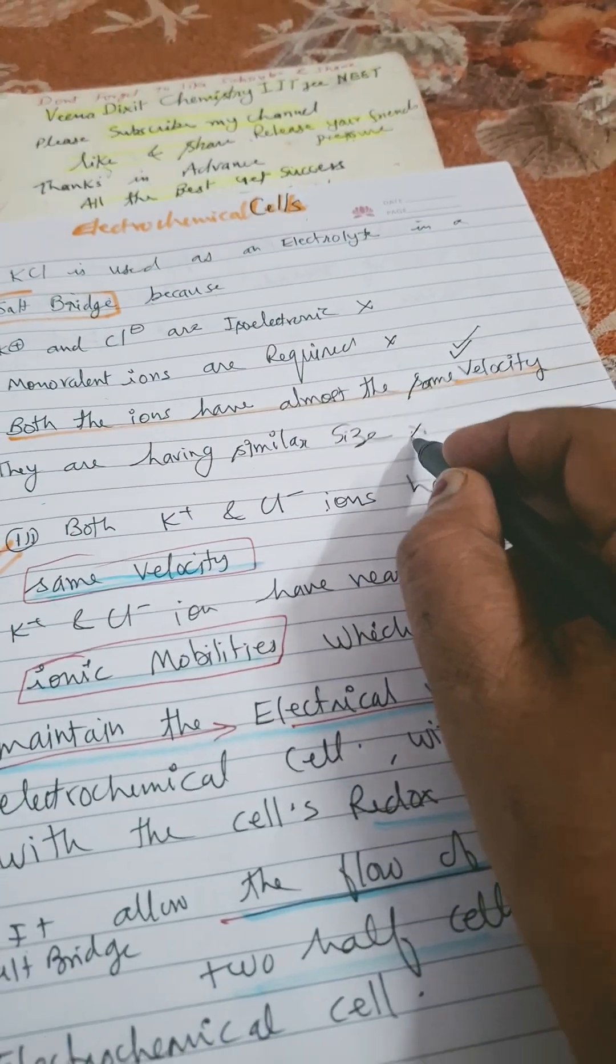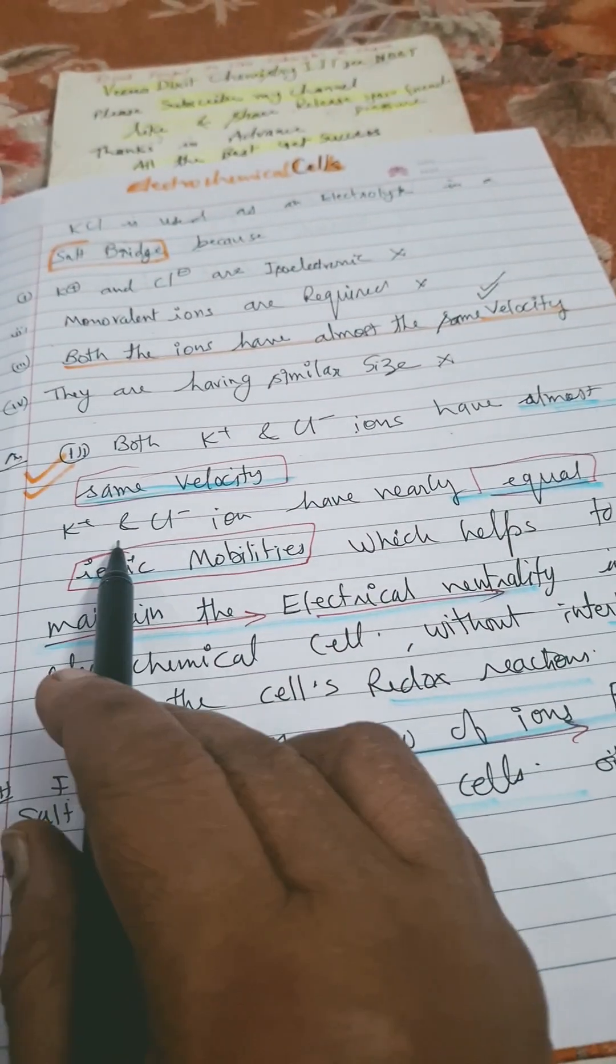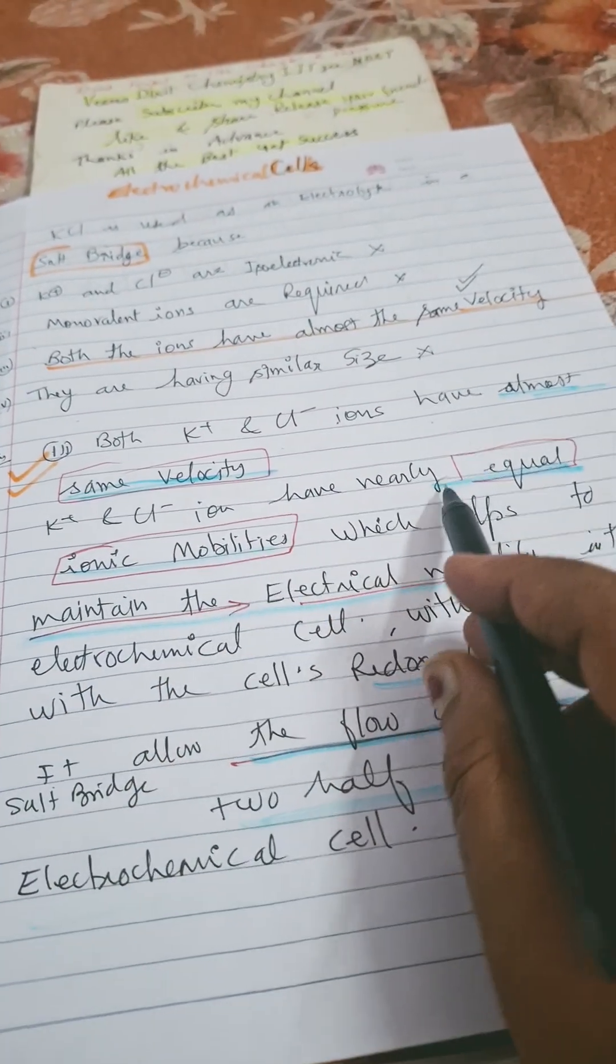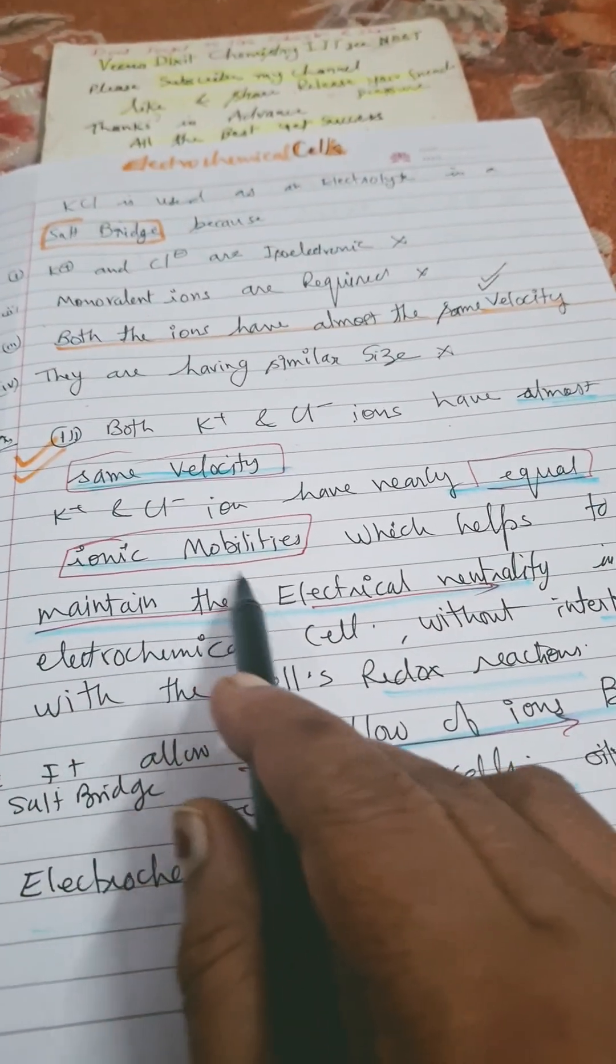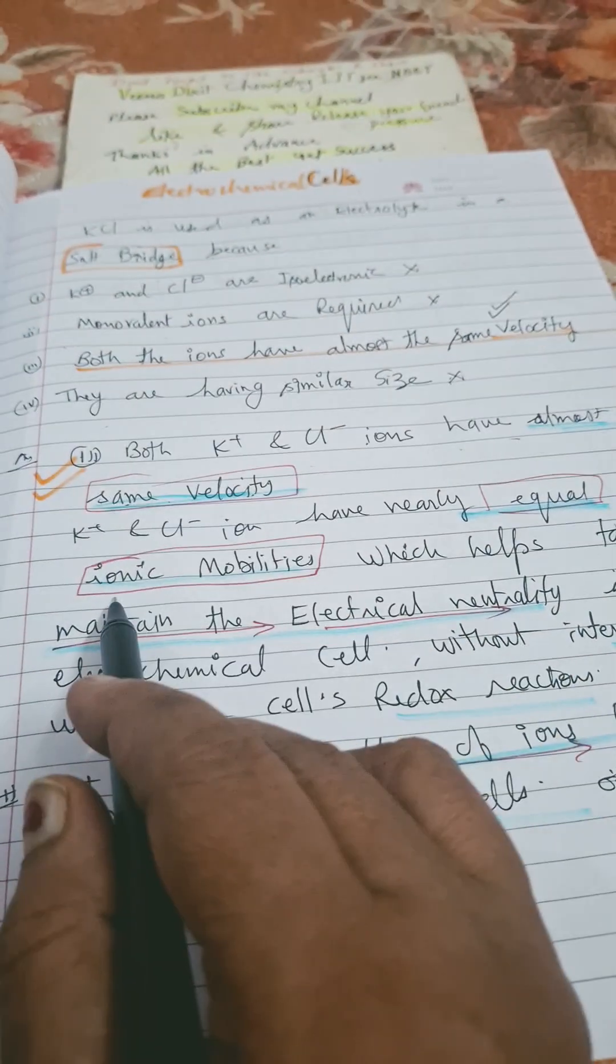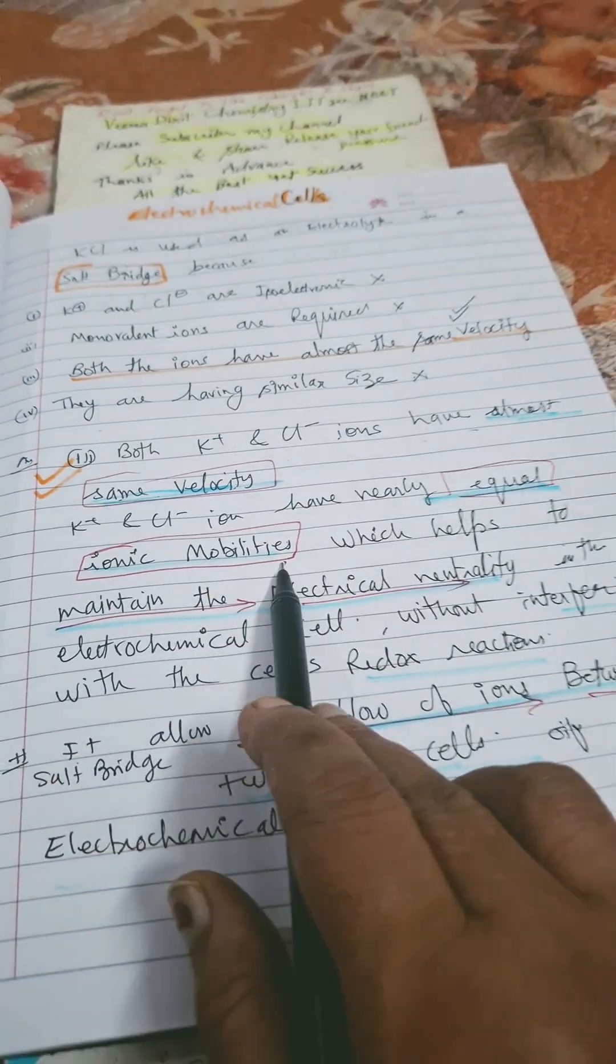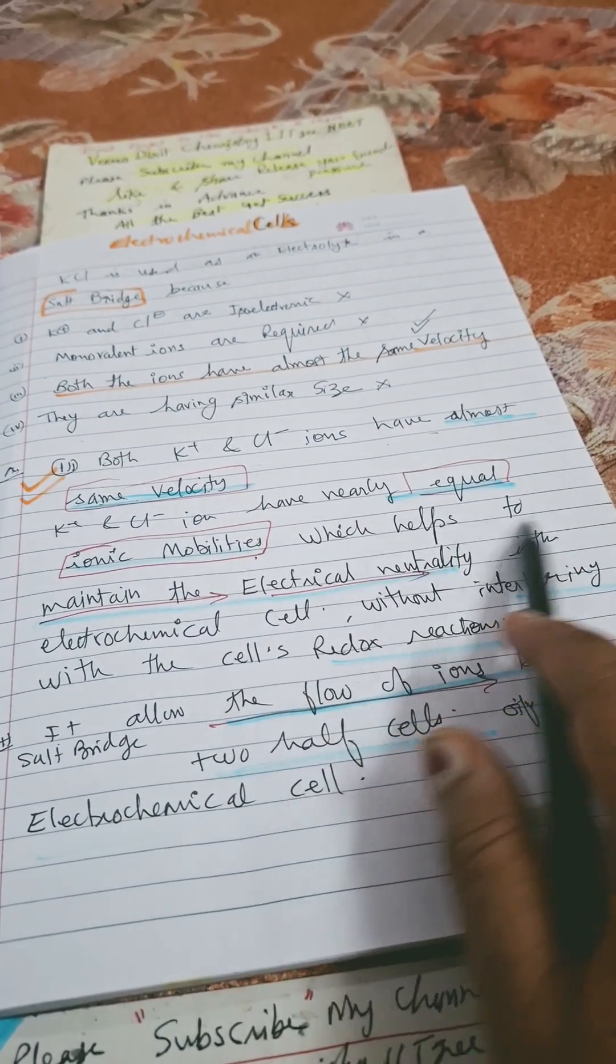So both K+ and Cl- ions have almost same velocity, or we can say they have almost the same equal ionic mobility. Ionic mobility means if we are using physics term here, we are using chemistry term. They have given this, so we have to select this. Ionic mobility nearly same, which helps to maintain electrical neutrality of the electrochemical cell.